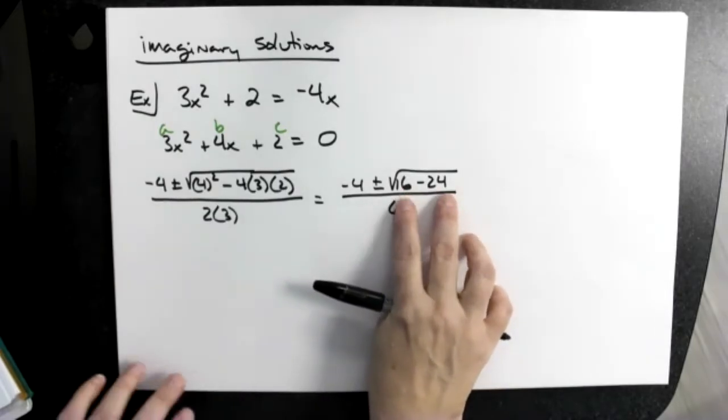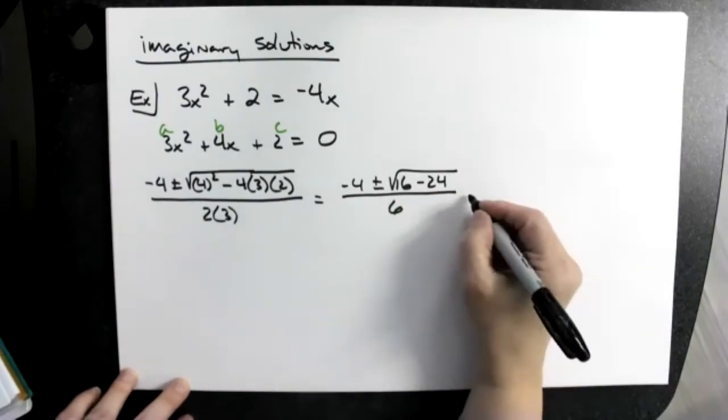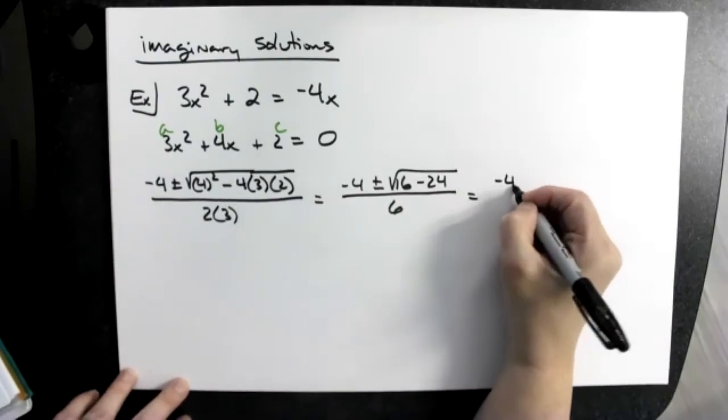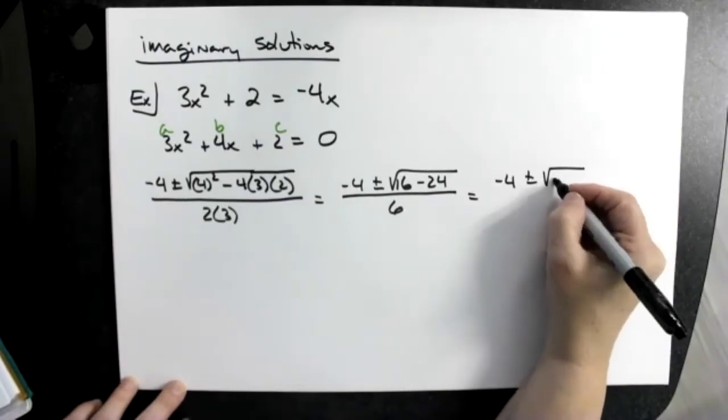So if you can see what's going to happen now, I'm going to get a negative number underneath this square root. Let's go ahead and do it: negative 4 plus or minus the square root of negative 8.